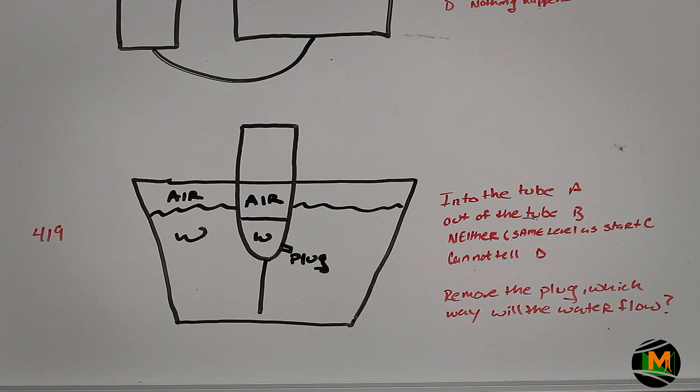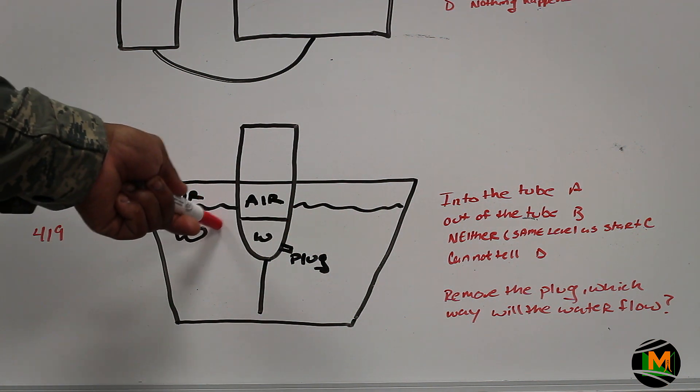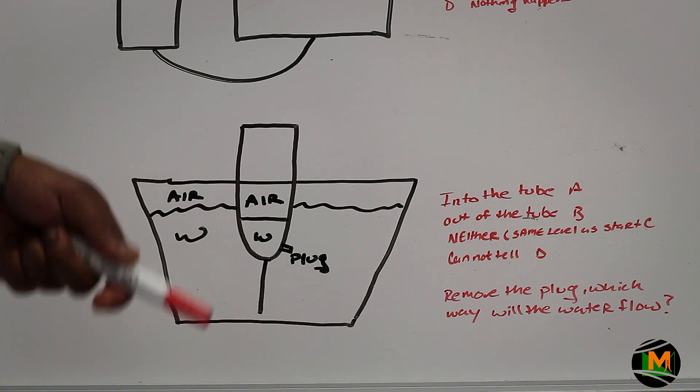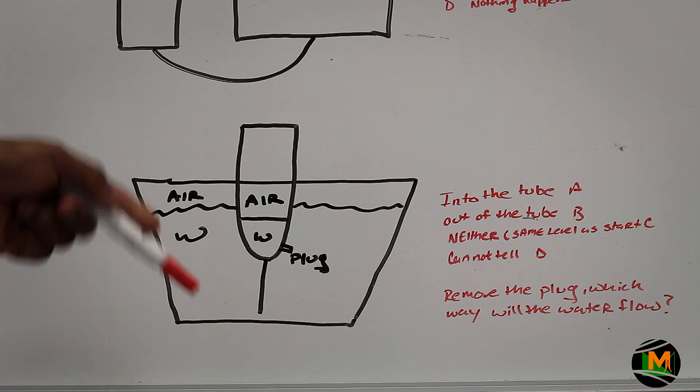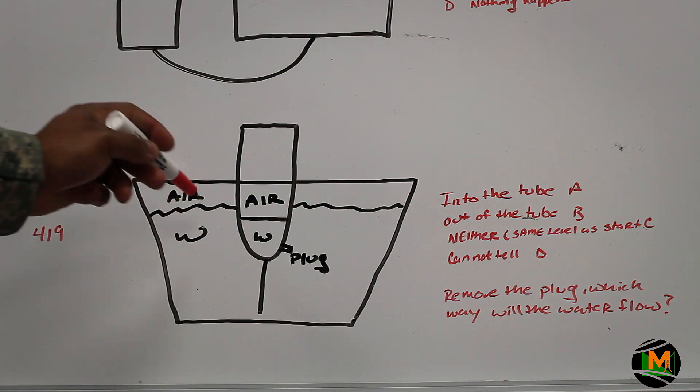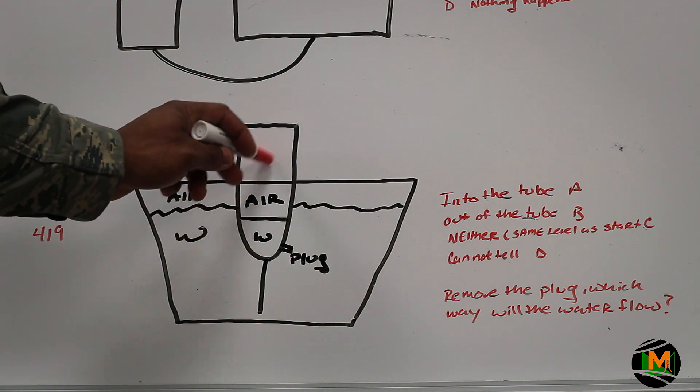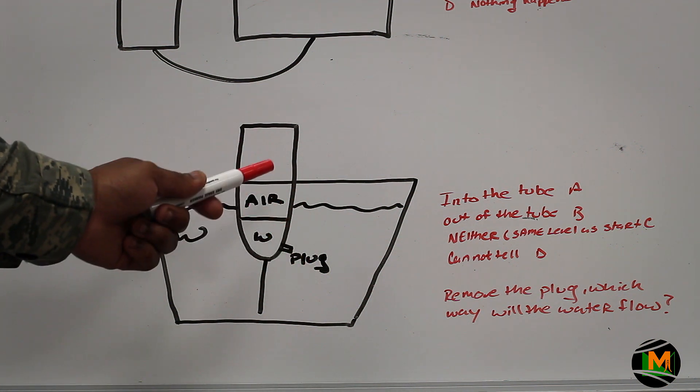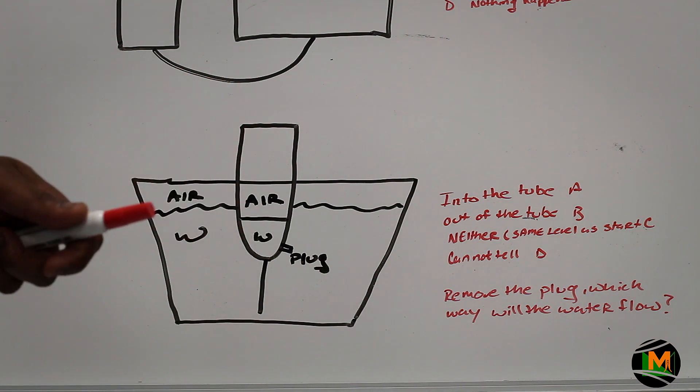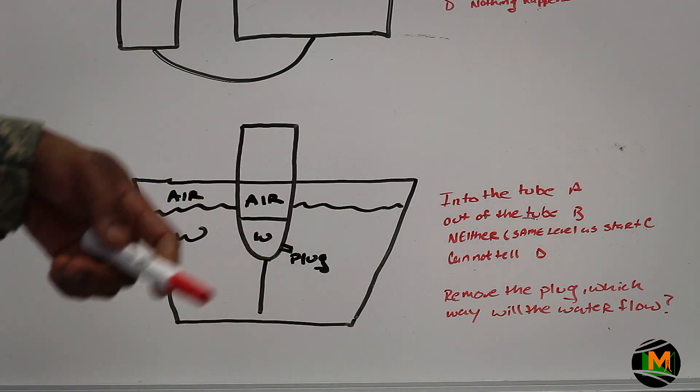The way to figure this problem out is to look at the diagram that you have. This level of water is higher than this level of water. So the scientific way to solve this is that gravity takes into effect and everything must come down. If the water level in the tank is higher than the water level in the tube, when you remove the plug, the water level in the tube will rise. Thus giving you the answer A, the water level will rise into the tube if you remove the plug.